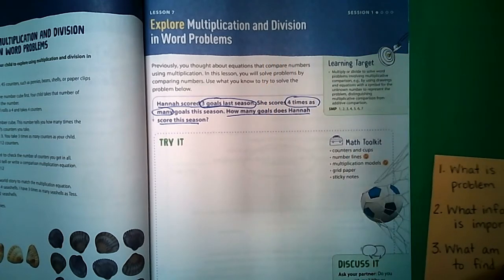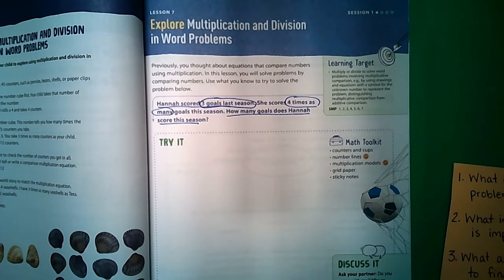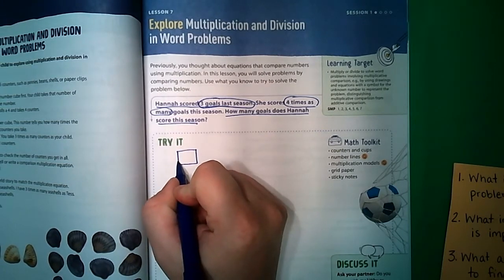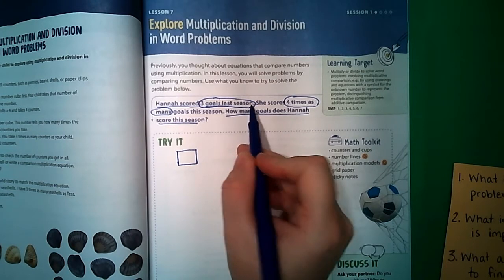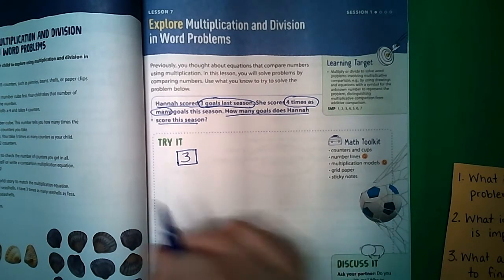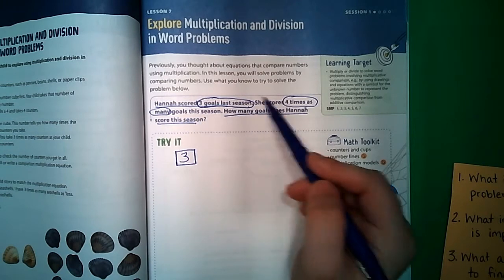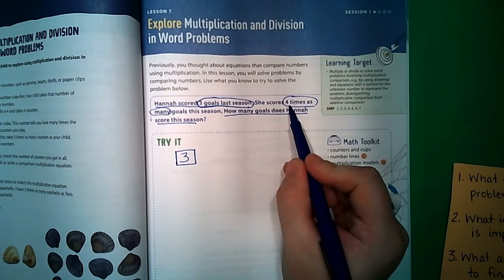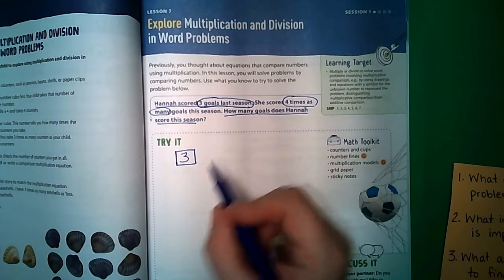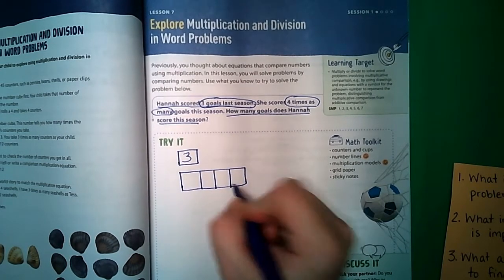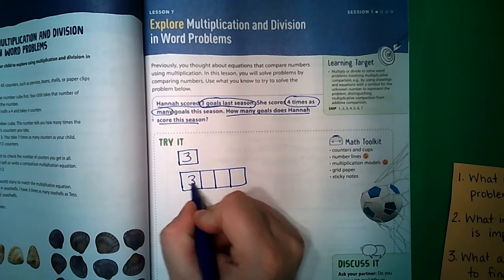I'm going to give you a couple of different examples for how this model should look. Our first model is our typical one from lesson 6, where we start off with one box that tells us Hannah scored three goals. Anytime we see 'times as many,' that tells us how many boxes we're going to draw. Because this says four times as many, we are going to draw four boxes, and this three is going to go in each box.